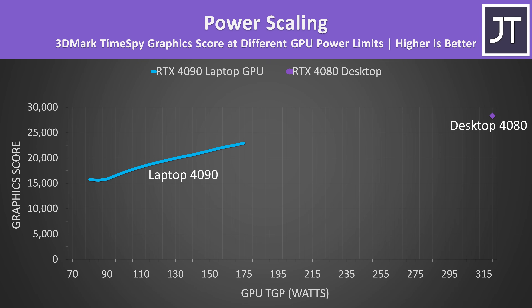The RTX 4090 laptop GPU can actually run as low as 80 watts, and this graph shows the difference in TimeSpy graphics score at different power levels. Maxed out at 175 watts, the 4090 laptop hits 23,000 points, while the desktop card was around 28,300 points — a 23% higher score for the desktop, but it needs an 83% higher TGP to achieve this.